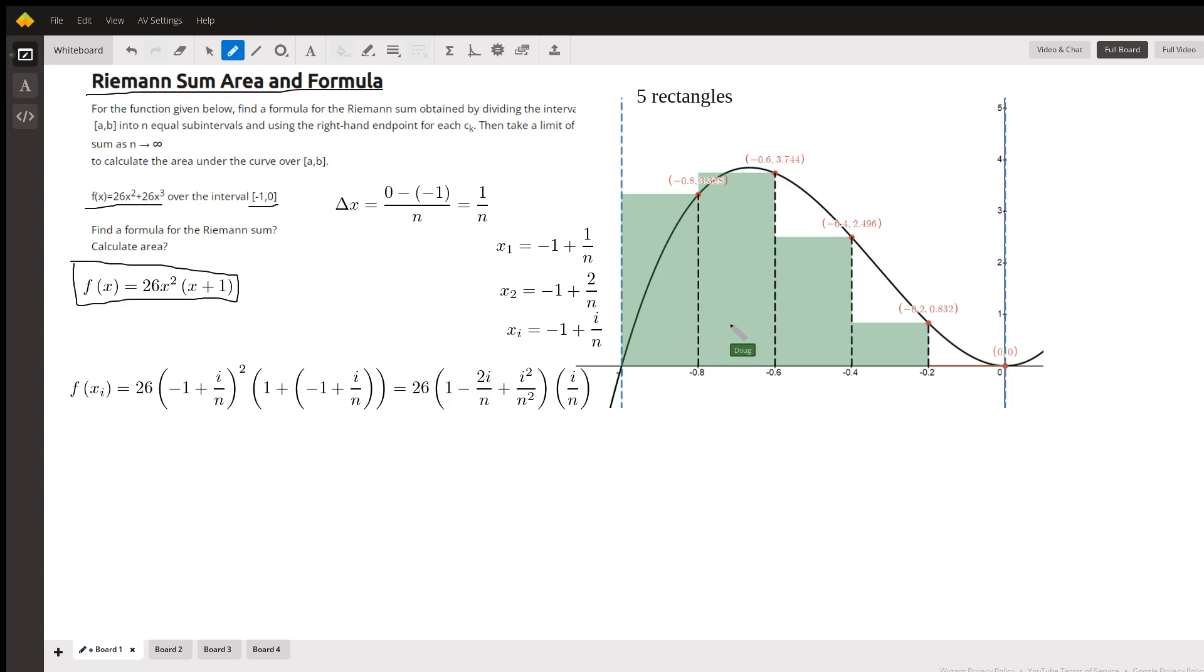this interval divided into five equal rectangles with right-hand endpoints. We want to keep dividing this interval into n rectangles and then let n approach infinity. So the width of each subinterval is going to be the right-hand endpoint, which is 0, minus the left-hand endpoint, which is negative 1, divided by the number of rectangles.